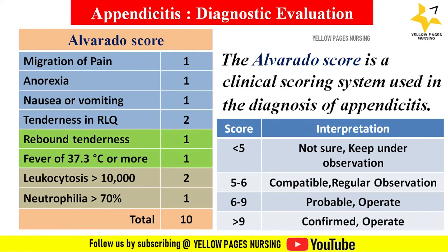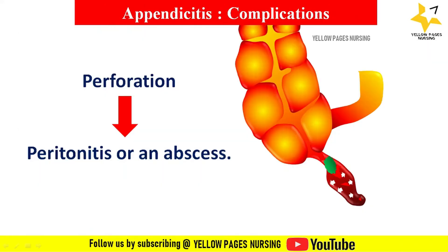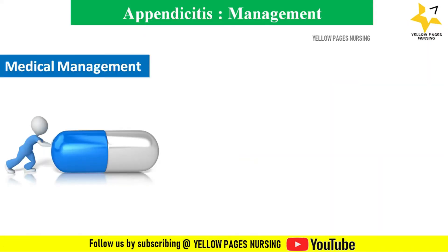The major complication of appendicitis is perforation of the appendix, which can lead to peritonitis or an abscess. Perforation generally occurs 24 hours after the onset of pain. Symptoms include fever of 37.7°C (100°F) or greater, toxic appearance, and continued pain and tenderness.